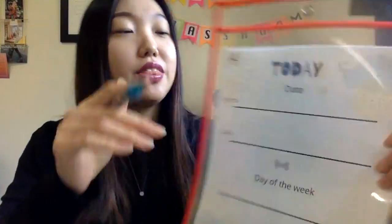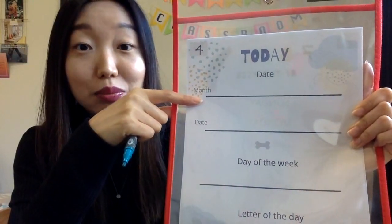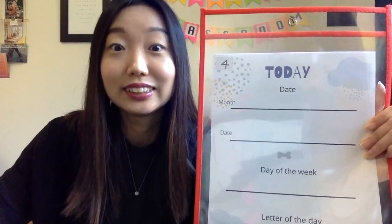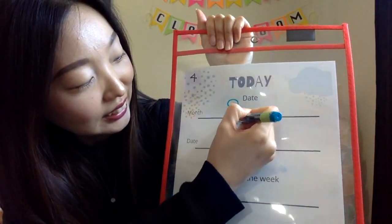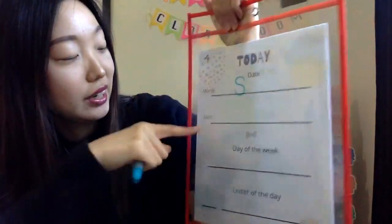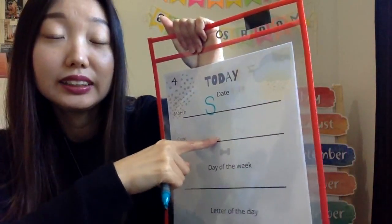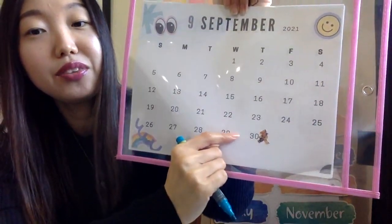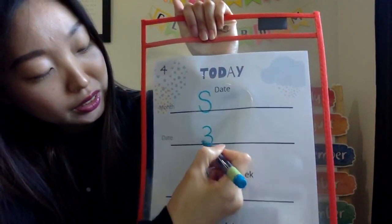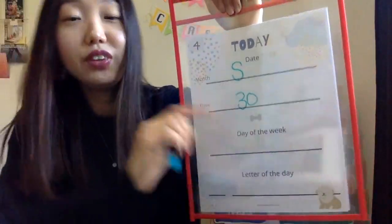Good job! Okay, last phase — time to write. Grab your marker. When we write the date, we always start with the month. The name of the month was September, right? What's the first letter for September? S! Good job — uppercase S for September. After the name of the month, we put the number of the date. What was the date? 30 — three zero together — that is 30. September 30!